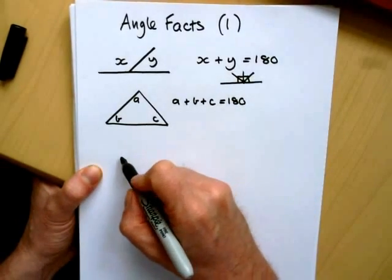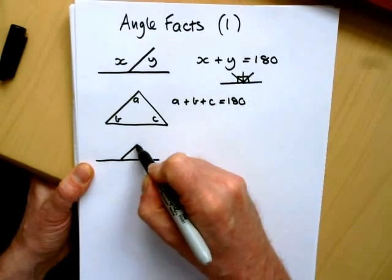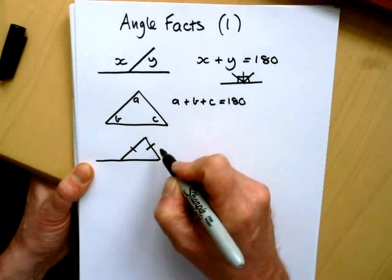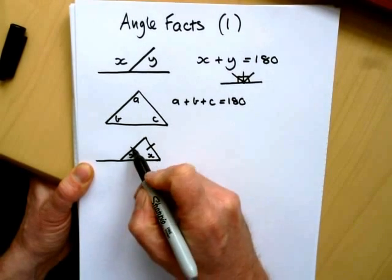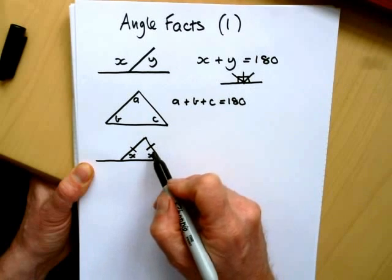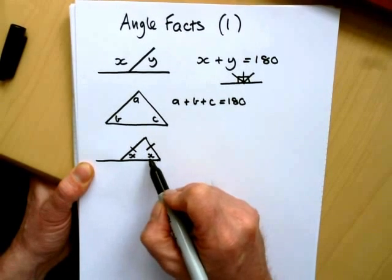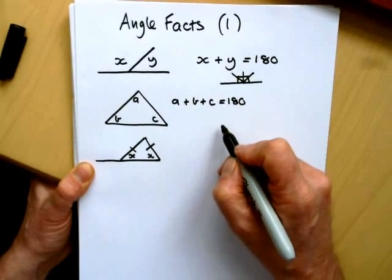But there are two other triangles we need to know about to help us do some of the questions on the exam paper. One is that we have an isosceles triangle, where two sides are the same in length, indicated by these dashes. And the two angles that are adjacent to these sides also are equal.